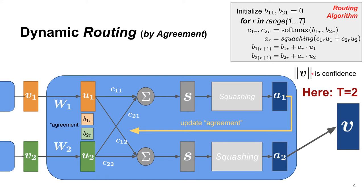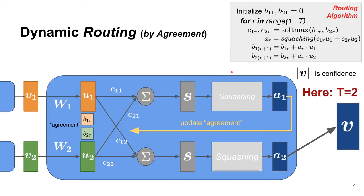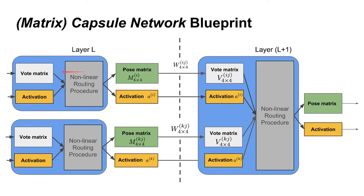With A1, you can apply a dot product for the vectors to calculate another agreement — C1, C12, C22 — and then do this process again to get A2 as the output at T equals 2. This is the routing mechanism from the original paper. However, here is a key point: the length of the vector is the confidence of existence. If you have the matrix capsule, then the routing mechanism should be somehow different, which is what this paper proposes with the EM routing mechanism.